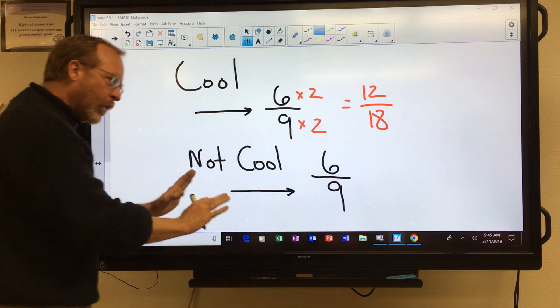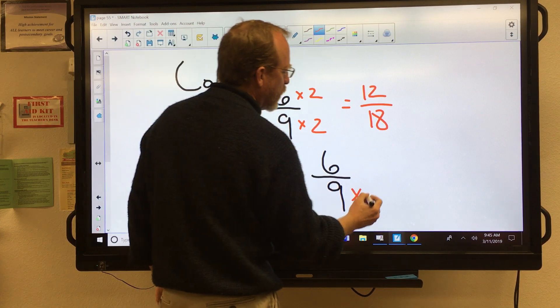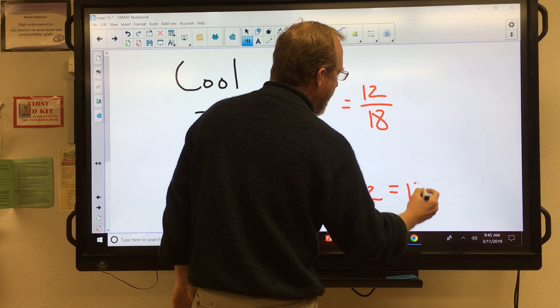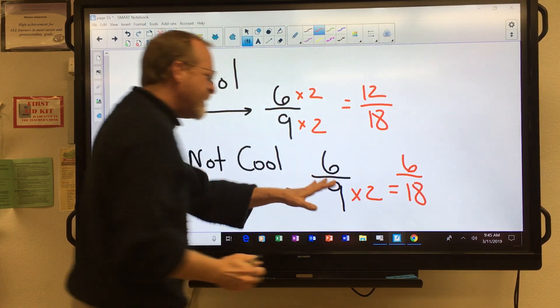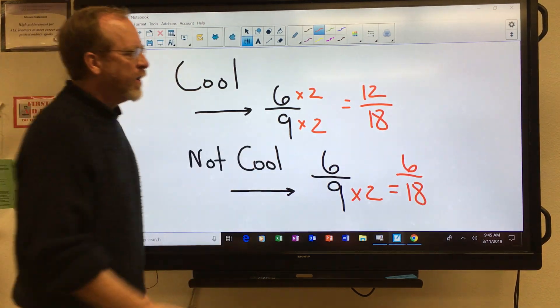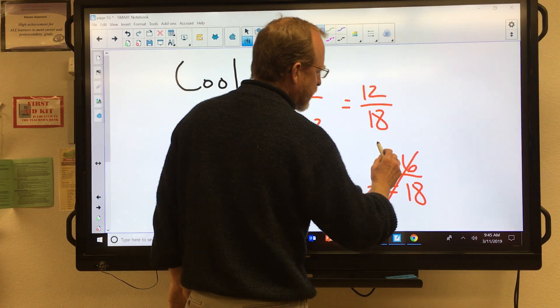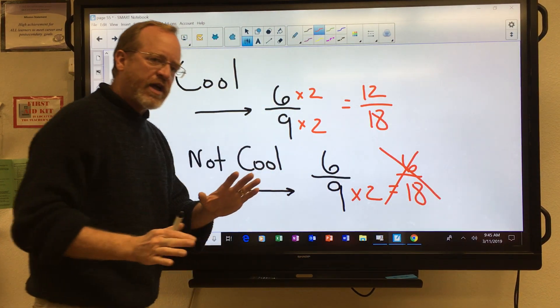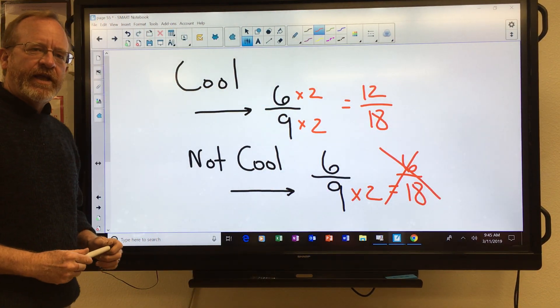But it is not cool to multiply the one and not the other. Do you see my mistake here? I've multiplied by two here, but I haven't multiplied by two here. So this is not a correct answer. So as you're doing your exercises, just watch out for that. And good luck.